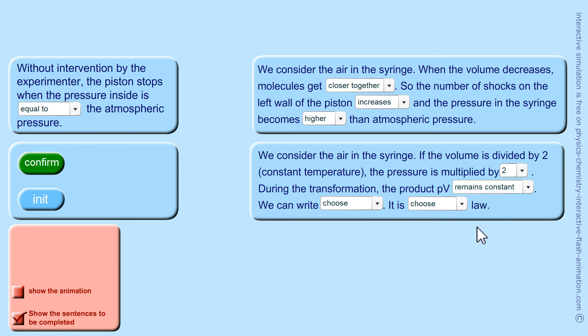...is constant. And we can write P1 V1 equals P2 V2. This law is called Boyle's law.